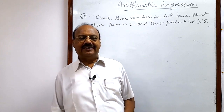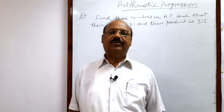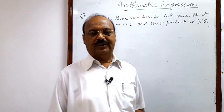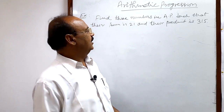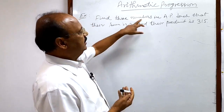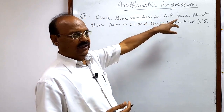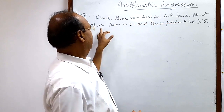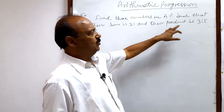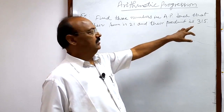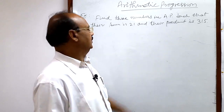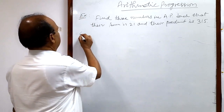Welcome students. Let us see a very interesting and simple question from the topic arithmetic progressions. The question is: find three numbers in AP such that their sum is 21 and their product is 315.